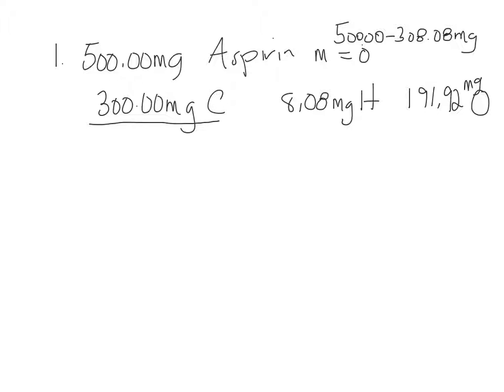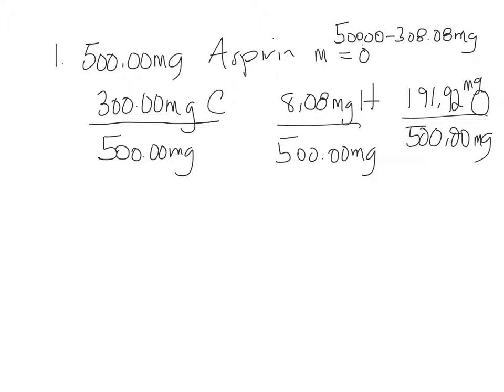So the whole tablet of aspirin is 500 milligrams. So our units, milligrams, are going to cancel for all of them. Take that value, times it by 100%, and that gives you the percent carbon, the percent hydrogen, and the percent oxygen.